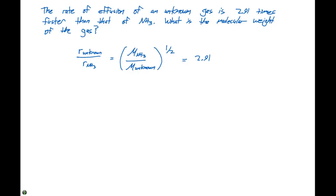First thing I want to do here is we typically don't like to work with things raised to the 1/2 power. So we're gonna square both of these terms. That would make our molar mass of NH3 times the molar mass of the unknown equal to 2.91, that quantity squared.